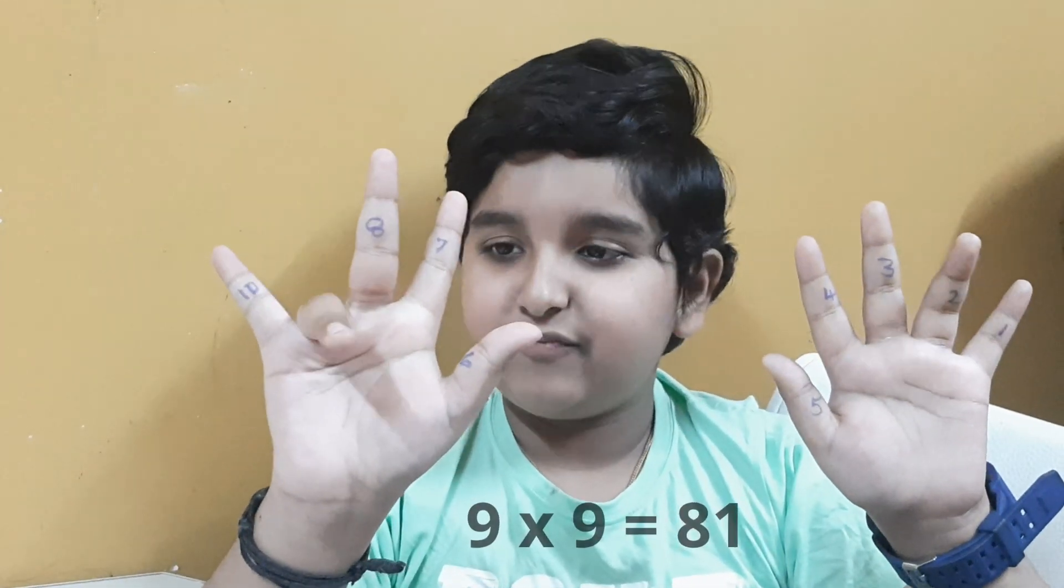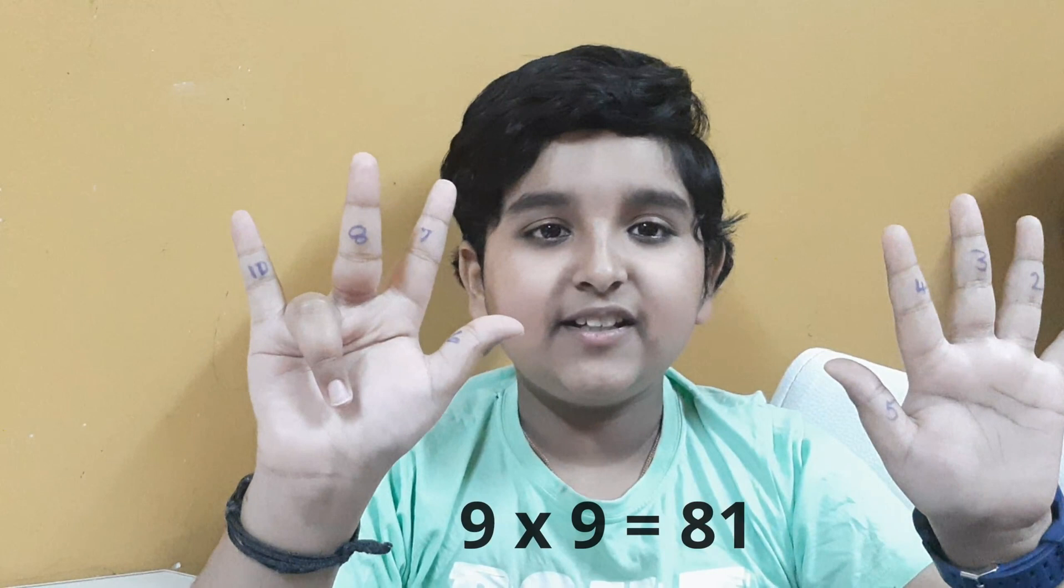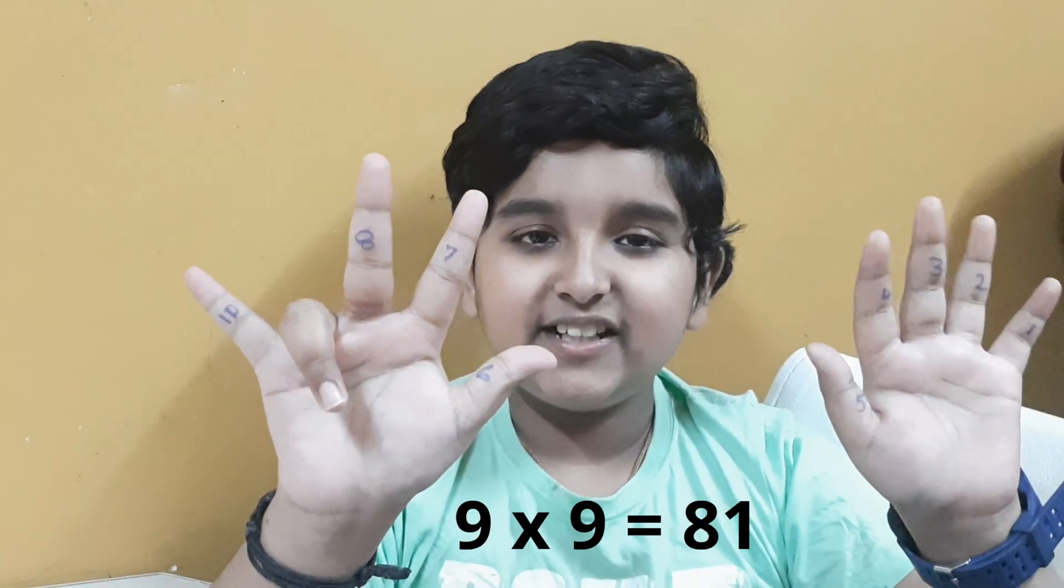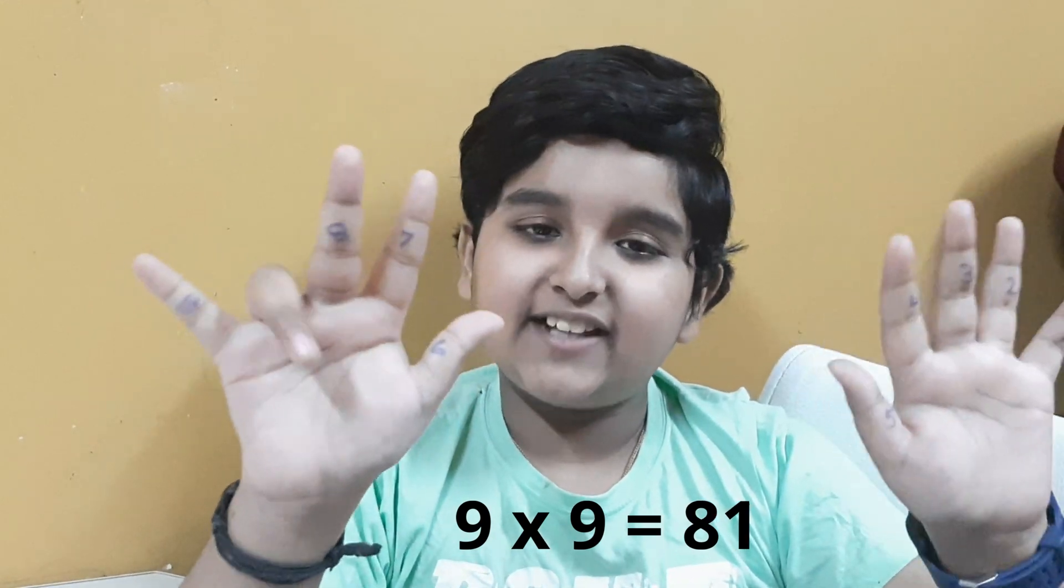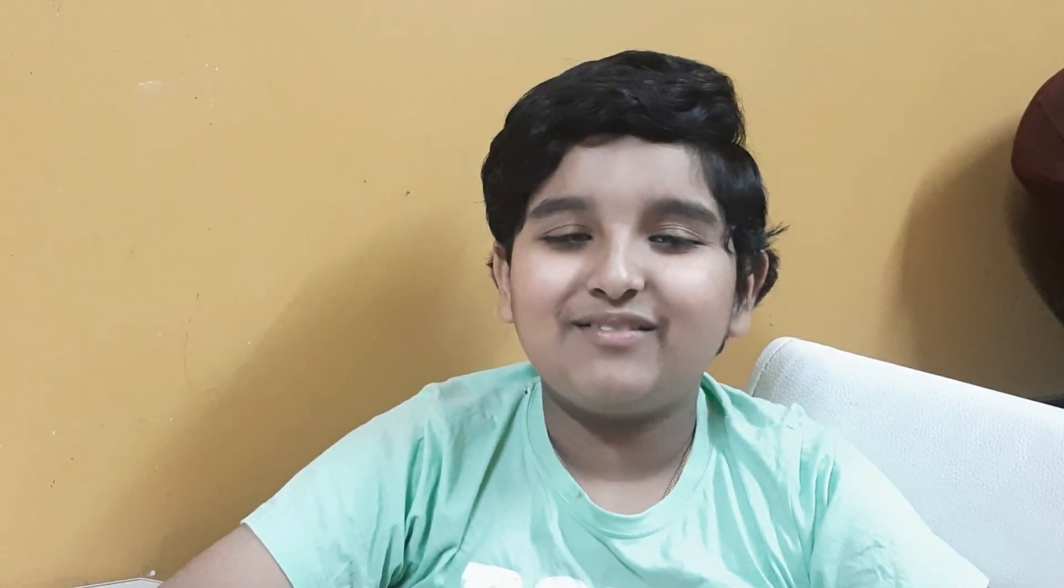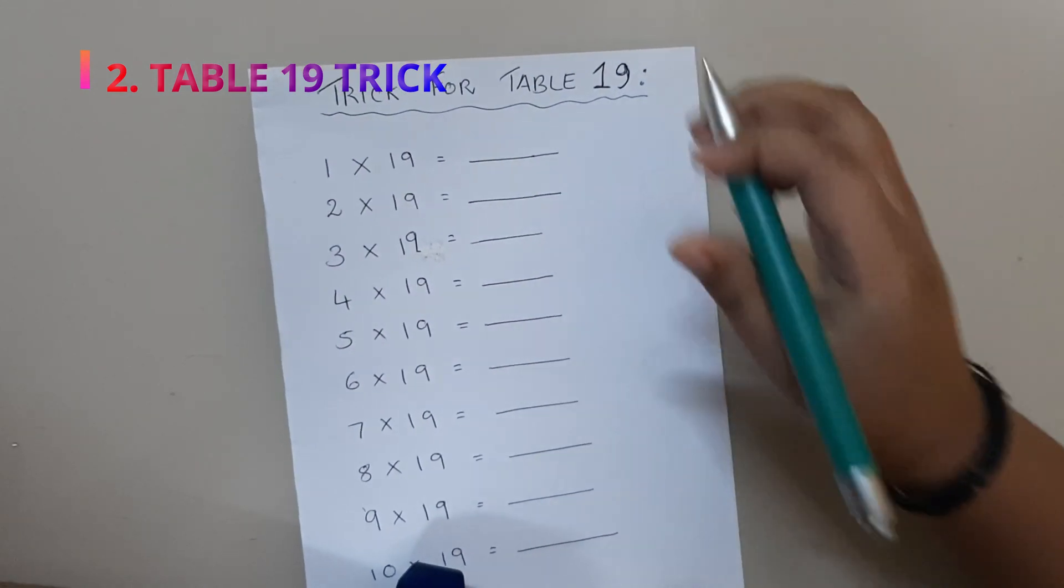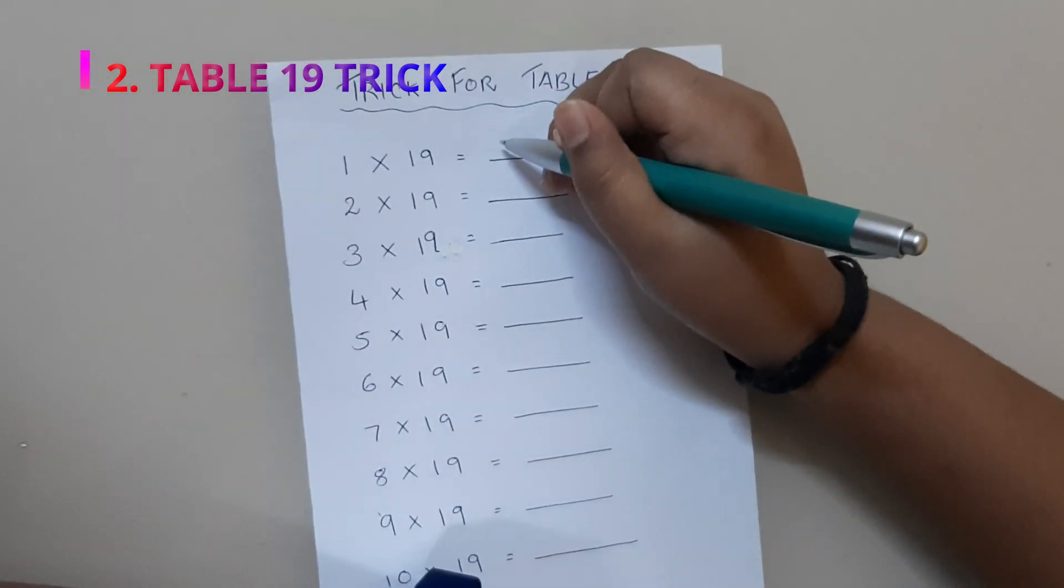Next we are going to do 9×9. We have to close the ninth finger. How many remains? Over here 8, here 1. So the answer for 9×9 is 81. So now it's easy, try it for yourself. So the second trick is for table 9.